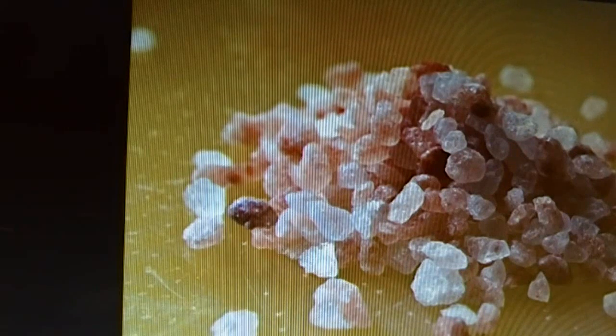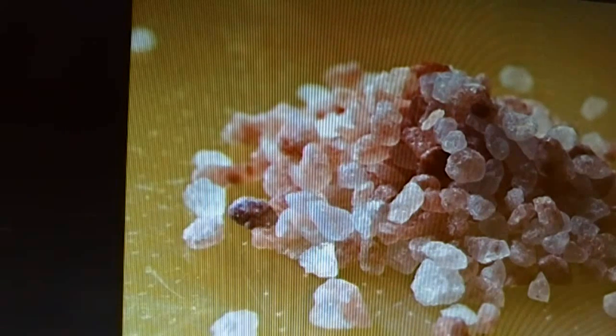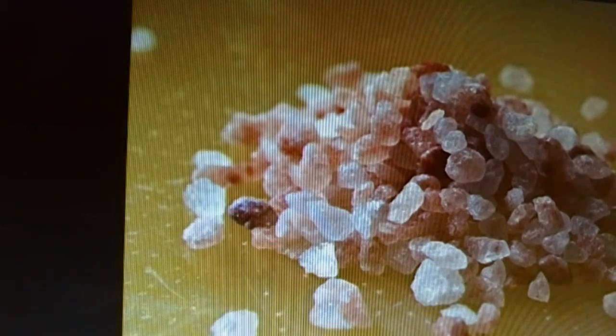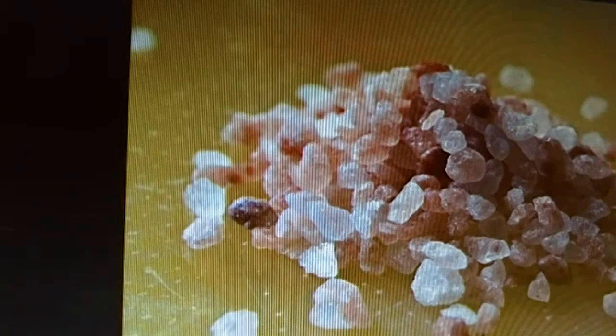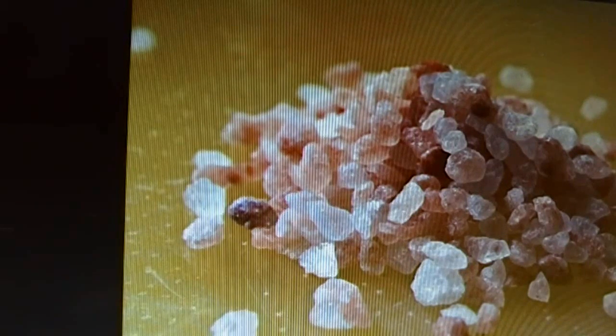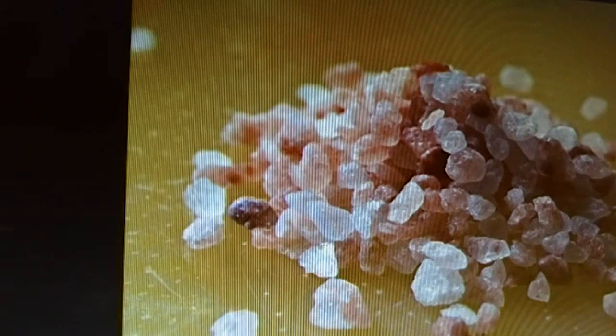The benefits of natural Himalayan salt include: regulating the water content throughout your body, promoting a healthy pH balance in your cells, particularly your brain cells. I think a lot of people forget that our brain is mostly water and fat, and it needs salt to function. Salt is important in helping electrolytes to perform what they need to do in your brain, promoting blood sugar health and helping to reduce the signs of aging, assisting in the generation of hydroelectric energy in the cells in your body. It aids absorption of food particles throughout your intestinal tract, supporting respiratory health, promoting sinus health, prevention of muscle cramps, promoting bone structure, regulating your sleep. It naturally promotes sleep, supporting your libido, promoting vascular health. In conjunction with water, it is actually essential for the regulation of your blood pressure.